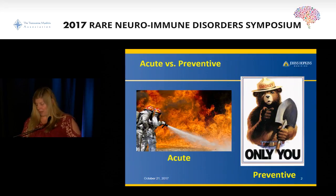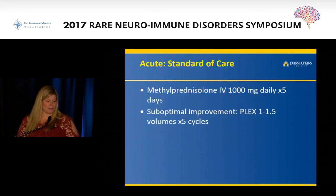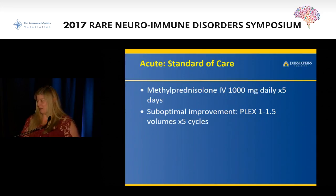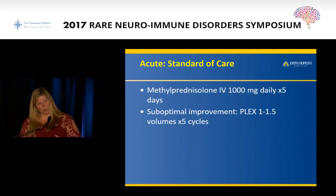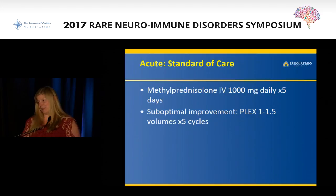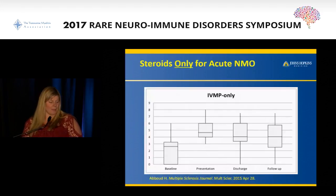There are a lot of exciting things. Let's start with acute treatment. Right now the standard of care - probably not very surprising to any of you because many of you got this - is methylprednisolone for five days, as well as, more often than not, plasma exchange. We know that suboptimal improvement suggests we ought to give plasma exchange, and in NMO most improvement is suboptimal. We did some data analysis to really establish that.